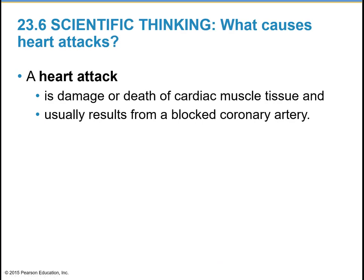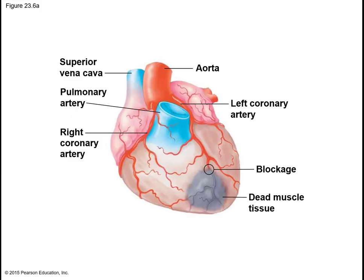A heart attack is when there is damage or death of cardiac muscle tissue, typically resulting from a blocked coronary artery. These small vessels feed the heart tissue, ensuring it gets oxygen and nutrients. If there is a blockage, it cuts off the cardiac tissue from oxygen and nutrients, causing it to die. The severity of the damage determines how severe the heart attack was and the future prognosis.